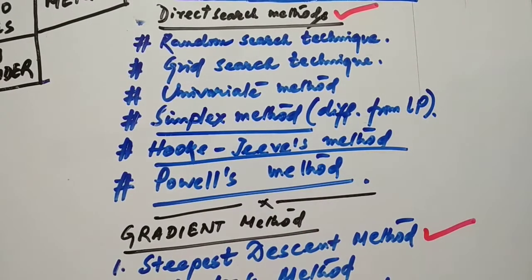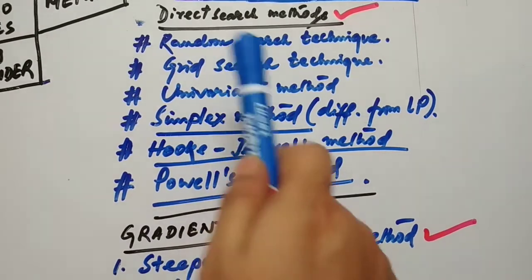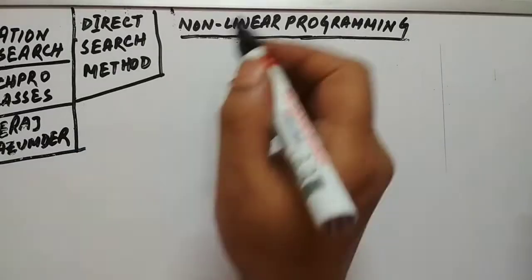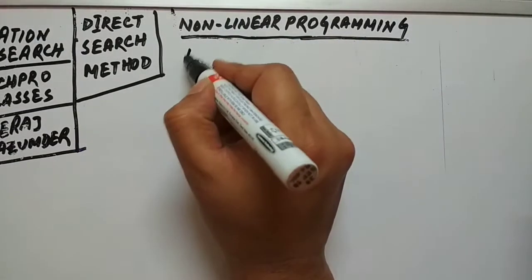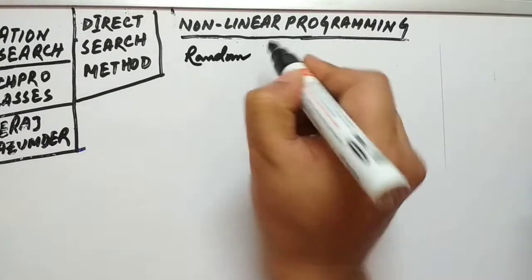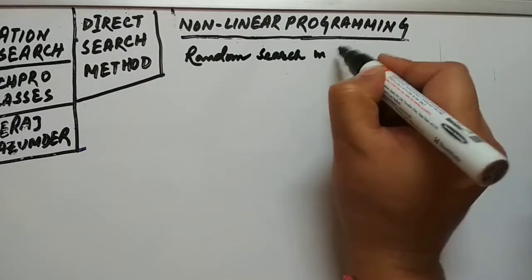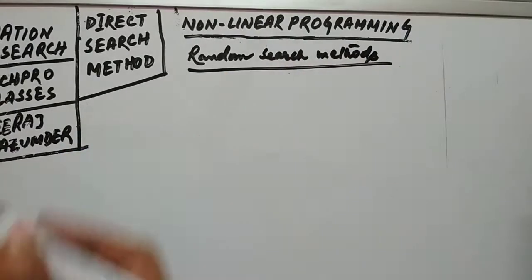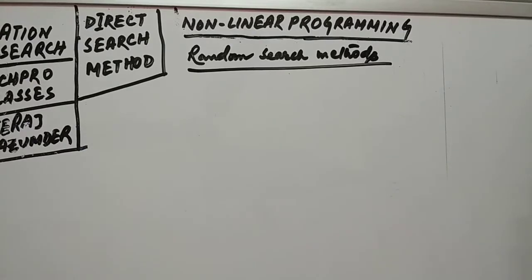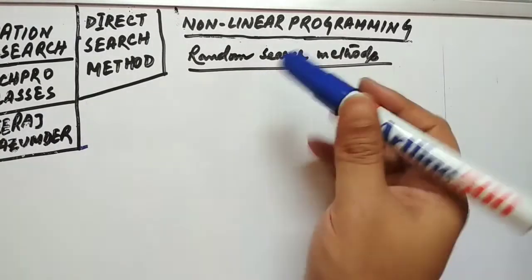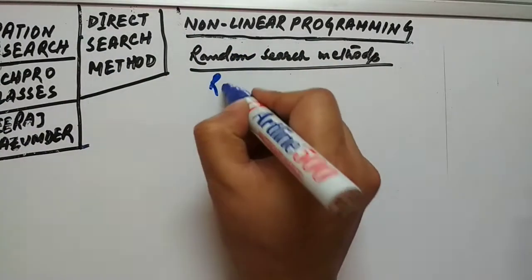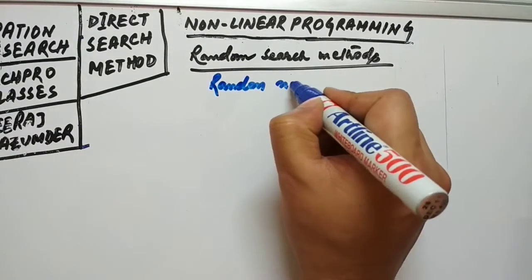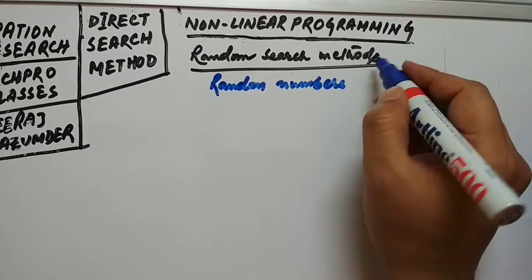In this video I am going to help you with direct search methods only. In the next session I will be making a video on the steepest descent method. In the direct search method we have random search methods. These are generally based on the use of random numbers — you have to generate random numbers in finding the minimum point.